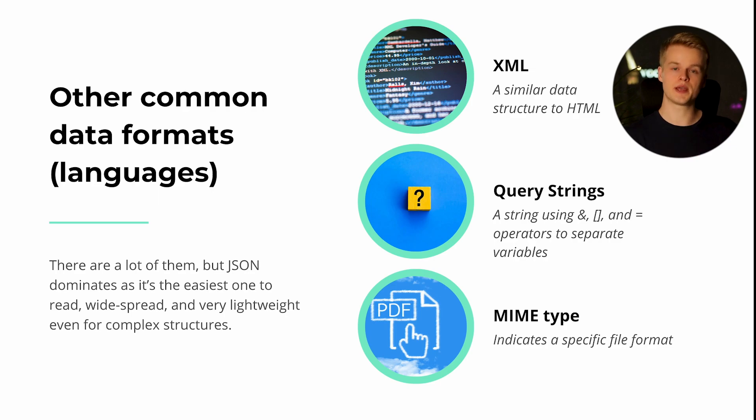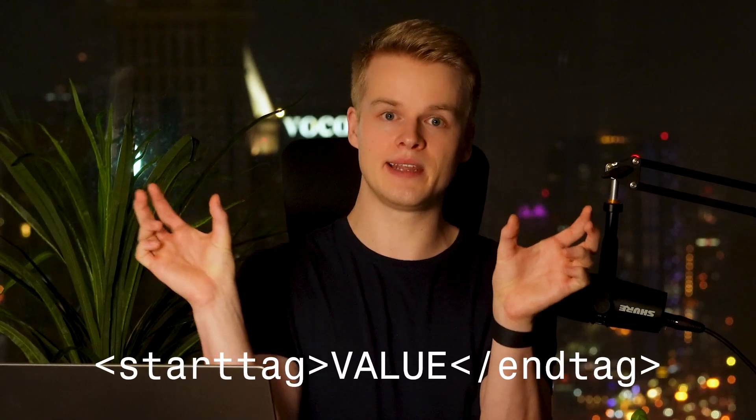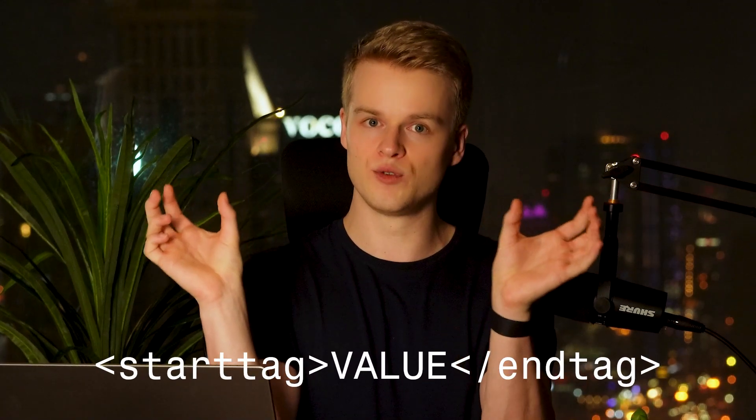XML is a structured way of showing data, just like JSON, but it's more complex to read for humans because it uses HTML-style notation. You wrap content within opening and closing tags, and the value sits in between — so you always need two tags, which makes things complex to read. XML is used for older webhooks or by larger companies that have been in the market a long time, but newer tools generally use JSON.